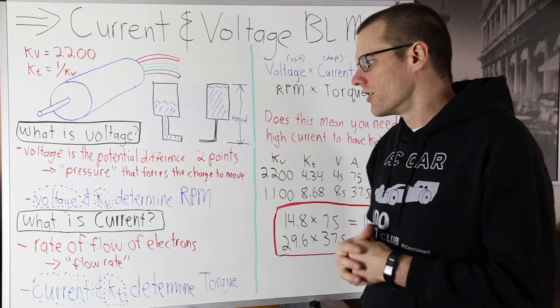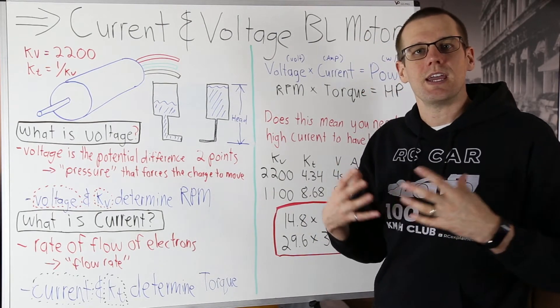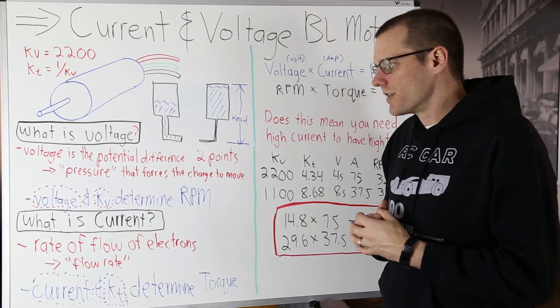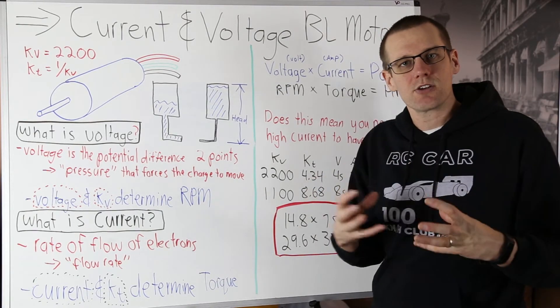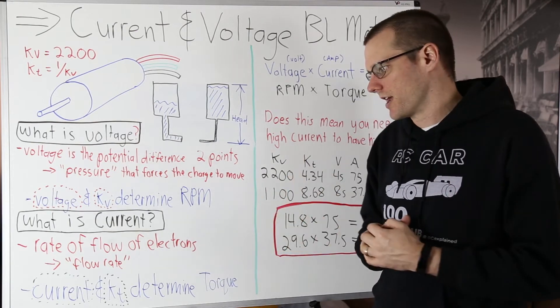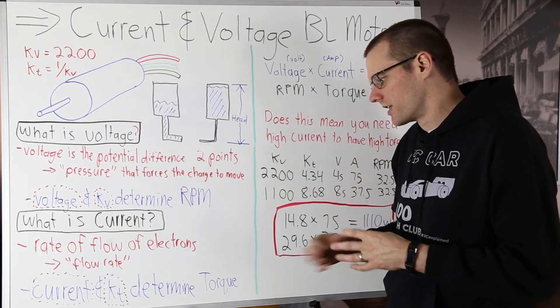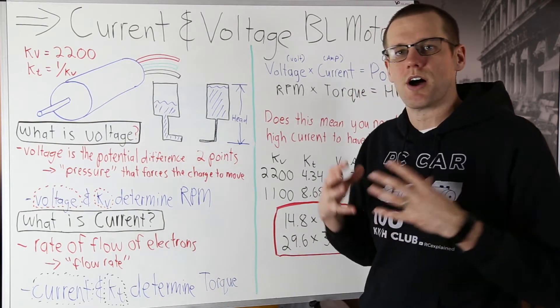Now when we look at current, current is the rate of flow of electrons within a circuit. If we look at what this boils down to as a mechanical property, it can be looked at as flow rate. Let's consider volumetric flow rate.